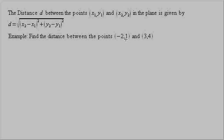We want to find the distance between the points (-2, 1) and (3, 4). Here the x₁ is our negative 2. So this would be x₁, the 1 would be y₁, the 3 would be x₂, and the 4 would be y₂. We just take these and plug them into the formula.